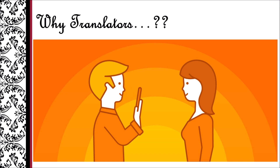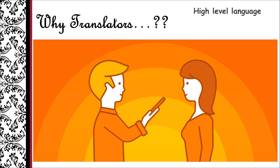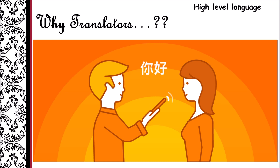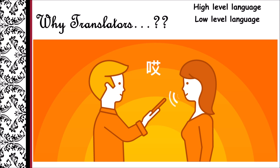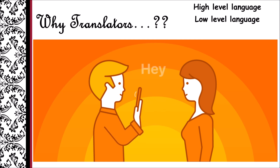For this purpose, we require certain translators. Now let us discuss the various categories of languages. The first one is high-level language, which contains data in human-readable format. The second is low-level language, which contains data in machine-readable format. And the third is assembly level language, which contains certain codes.